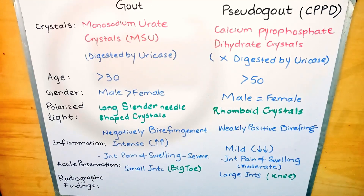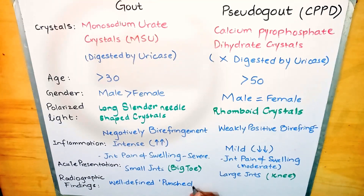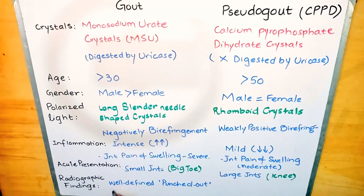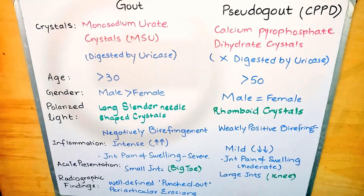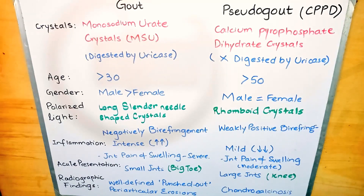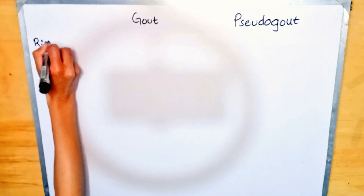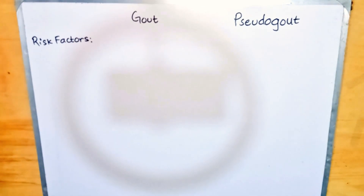In radiographic findings, gout presents with well-defined punched-out periarticular erosions, with no calcification. Soft tissue swelling is also present but is not seen until 6 to 12 years after the initial attack. In pseudo gout, chondrocalcinosis can be seen, meaning there is calcification of the articular cartilage and the menisci.